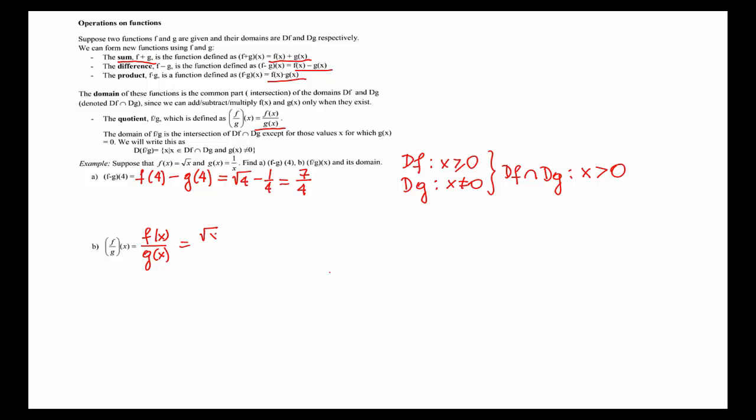which is the square root of x divided by 1 over x. Dividing by 1 over x is multiplying by x, so we have x square root of x.